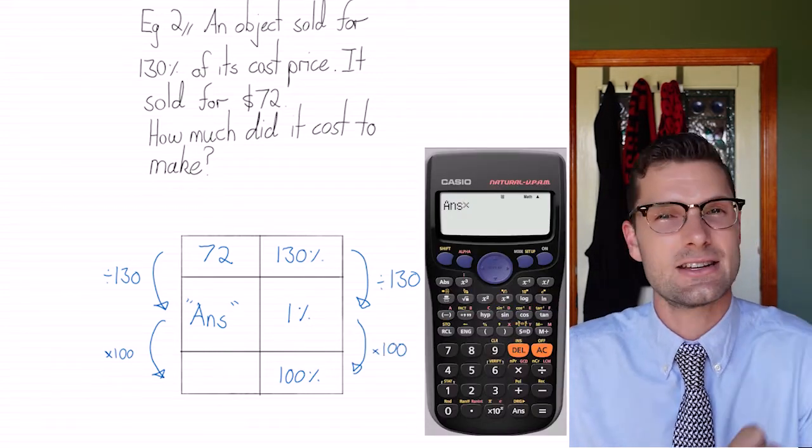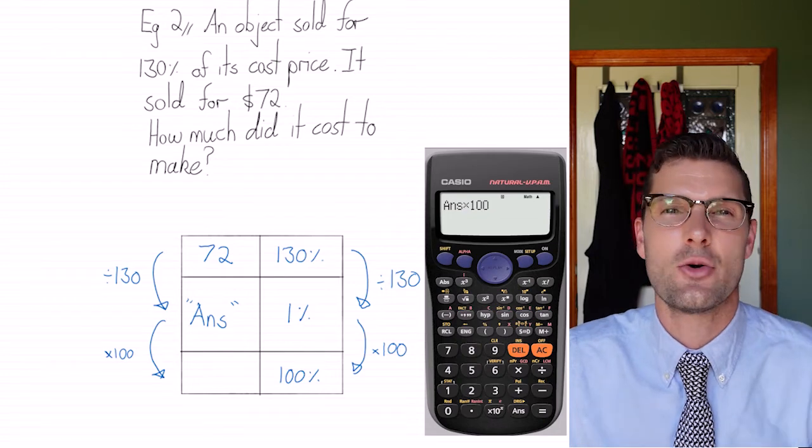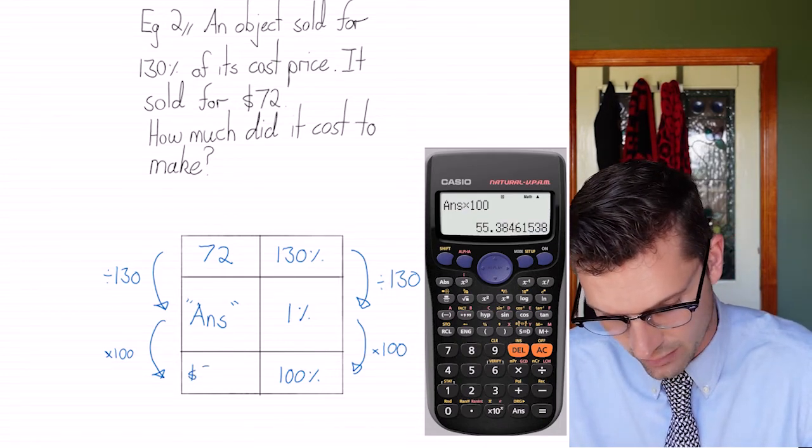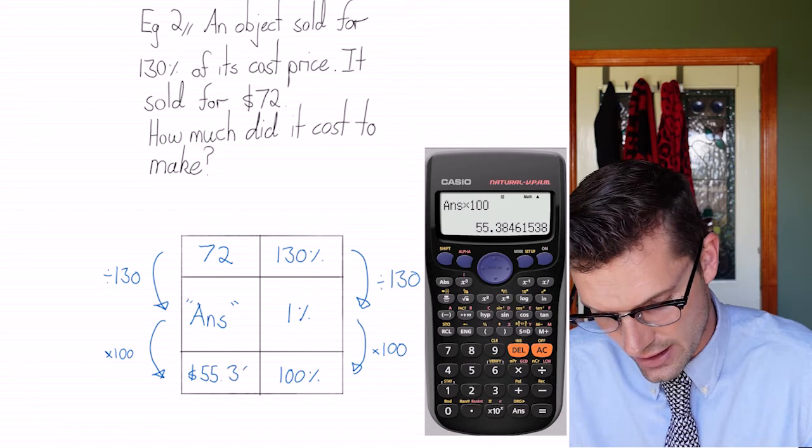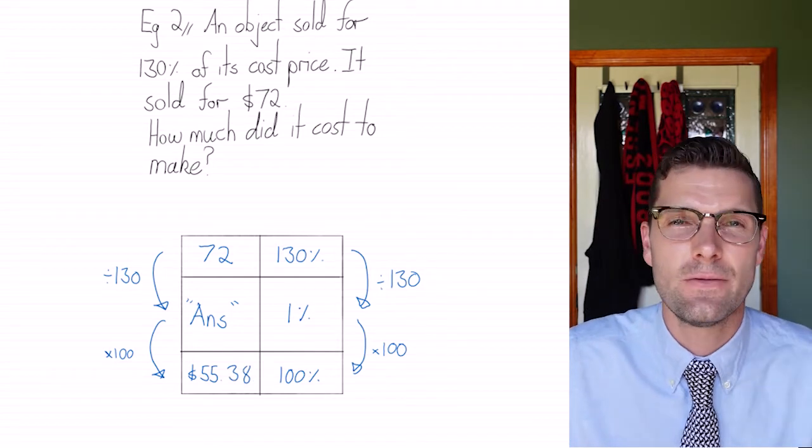So that'll come out in my calculator. I want you to put answer times 100%, just to make sure we're not making any rounding errors. And that comes out to $55.38. And that is your final answer.